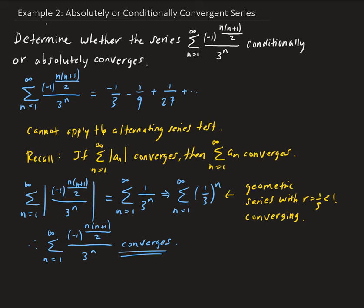That tells us that because we took the absolute value and it's converging, this means, this implies that this original series is absolutely converging. So it's absolutely converging as well. All right. So we have a result.